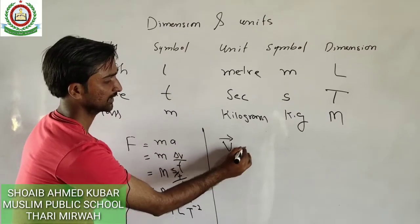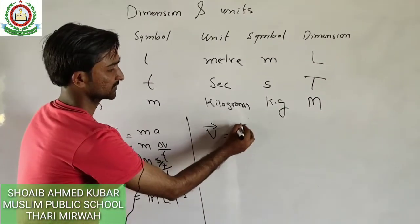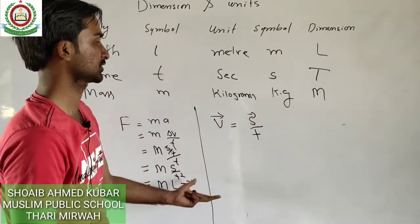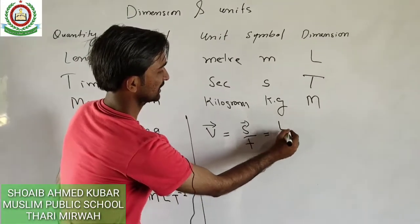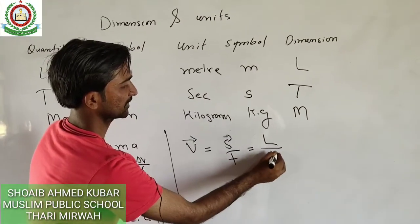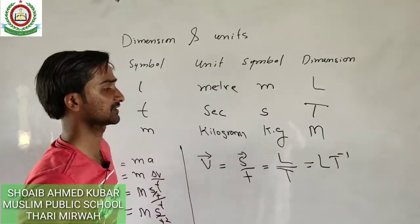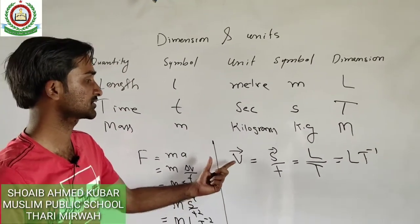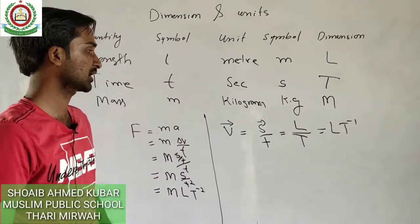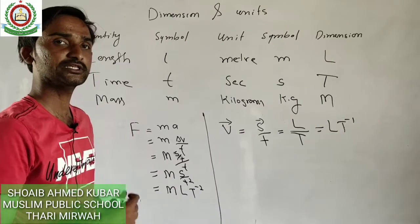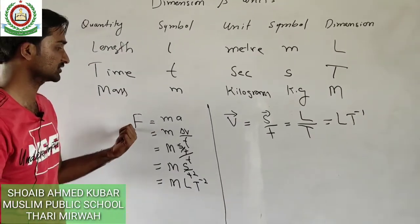Velocity is a vector quantity — it is the rate of change of displacement, equal to s divided by t. The dimension can be written as distance dimension L and time dimension capital T, giving velocity the dimension LT⁻¹.